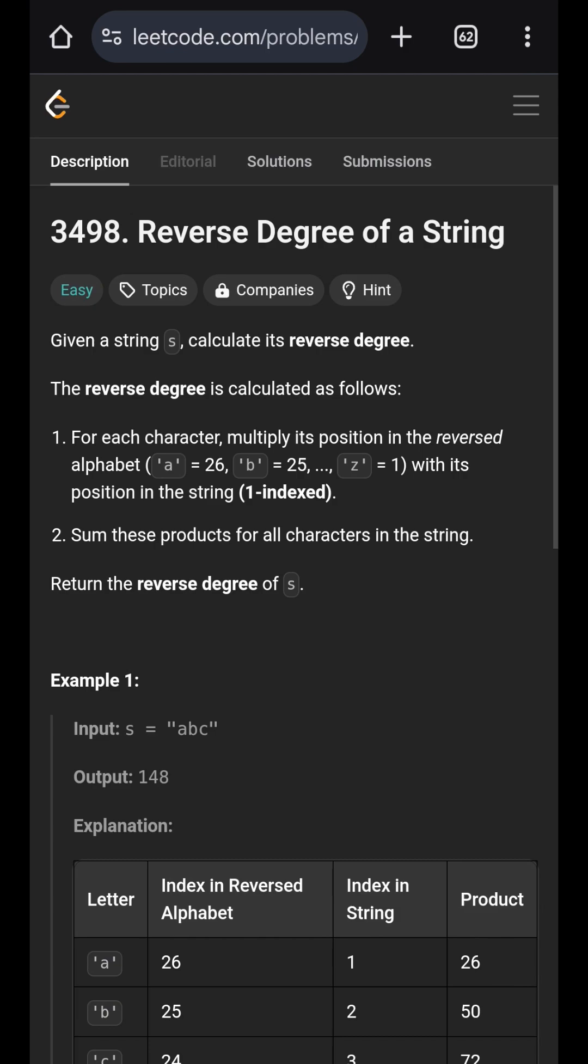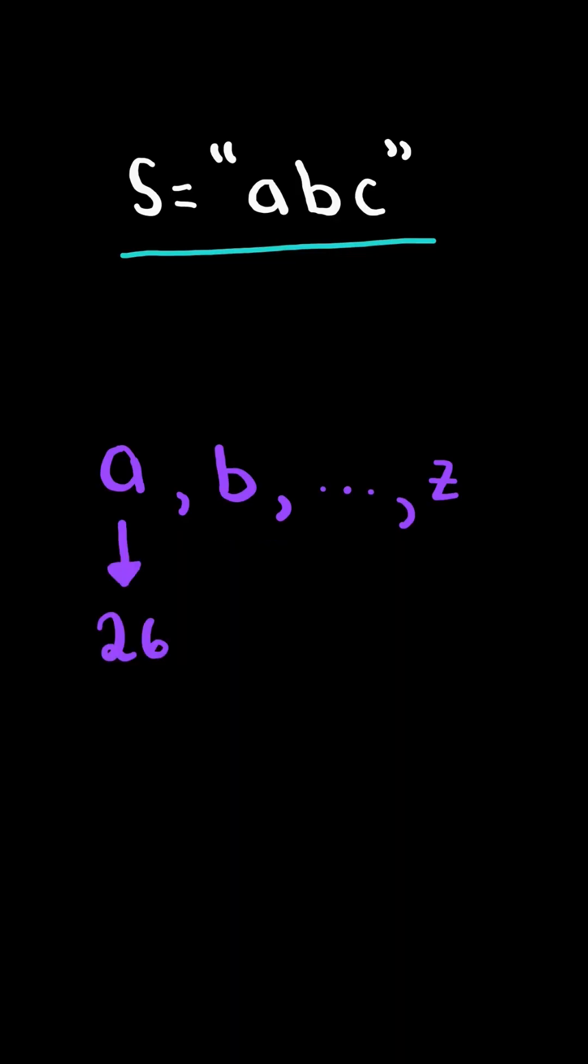Reverse degree of a string. Consider the alphabet where A maps to 26, B maps to 25, all the way to Z mapping to 1.